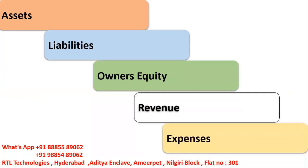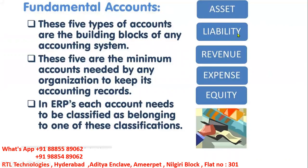Whenever we are trying to create a value set in the Chart of Accounts structure for the account segment, or if we already have a value set and try to enter a value, we are supposed to choose one of these five options: Assets, Liabilities, Owner's Equity, Revenue, and Expenses. Any organization uses these five accounting types to keep accounting records properly. Whenever we create any account, we classify it under one of these accounting types.